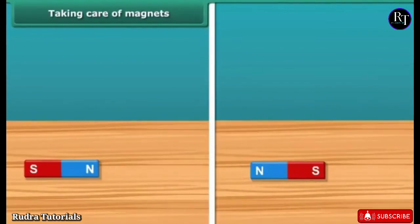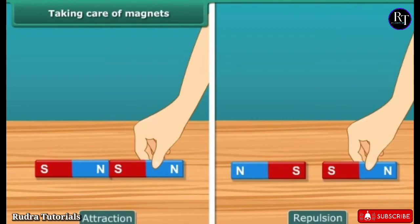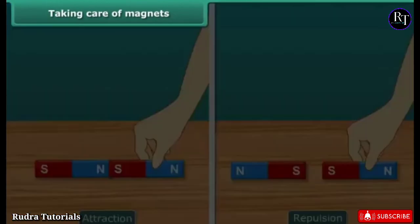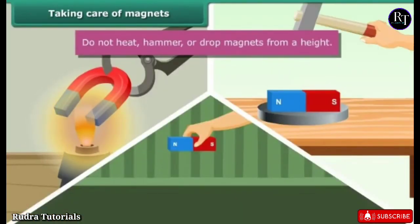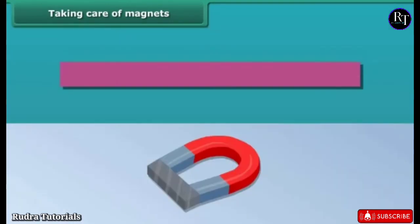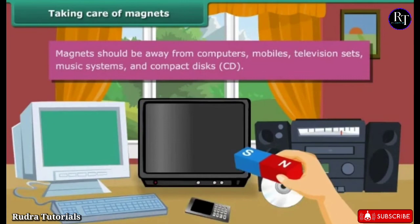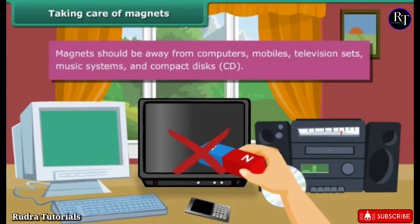Taking care of magnets — to keep magnets safe and in working condition, follow these guidelines: do not heat, hammer, or drop magnets from a height, as they will lose their property. Keep bar magnets in pairs with their opposite poles on the same side, and use wood to separate them. Keep a piece of iron across the poles of a horseshoe magnet. Magnets should be kept away from computers, mobiles, television sets, music systems, and compact discs.